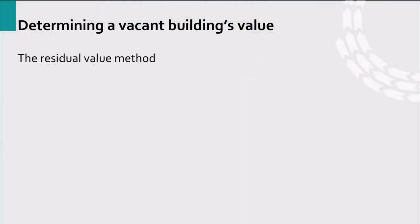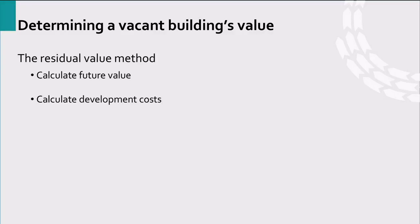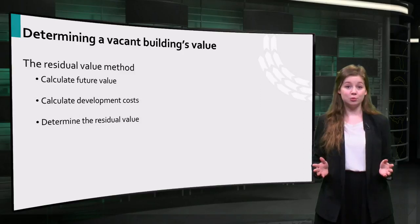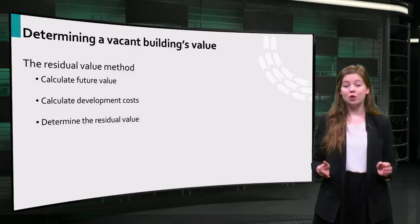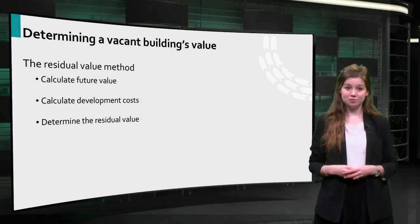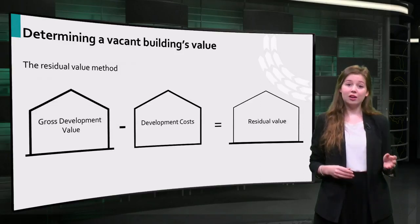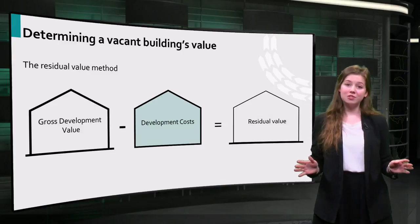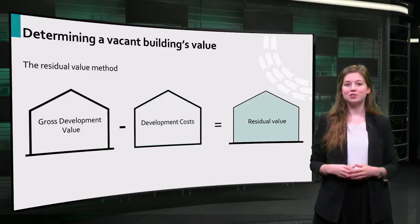The value of a vacant building can be determined with the residual value method. In this method you calculate the future value of the building for a specific reuse concept, the development costs, and you then determine the residual value. The residual value is the price that a developer is willing to pay for a vacant building when transforming it into a specific function. You calculate the residual value with the following formula: the gross development value minus the development costs equals the residual value.